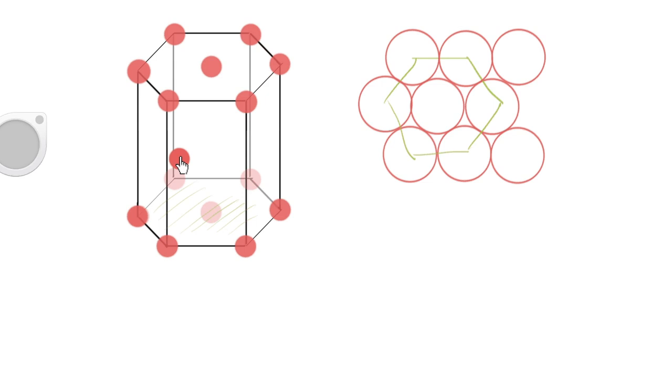Well, where those mid-plane atoms, as we sometimes call them, are positioned, are in these little spots between the other atoms. I'm going to just identify these for you. See these three little atoms here? That's actually part of a close-packed plane. That would look something like this.